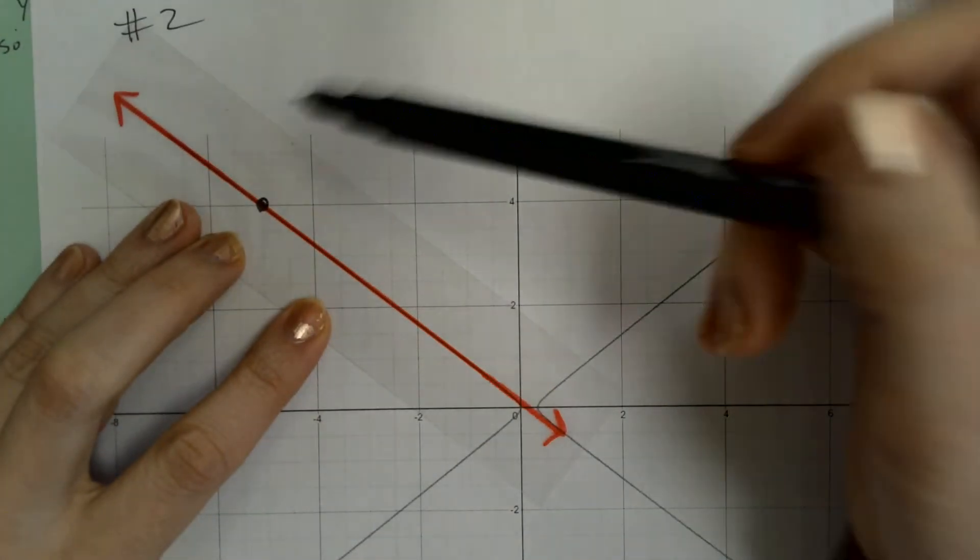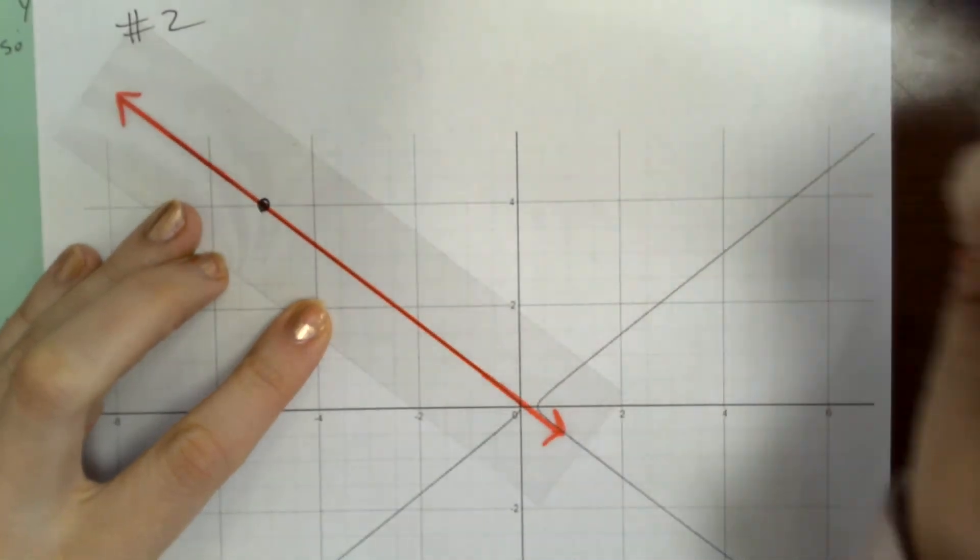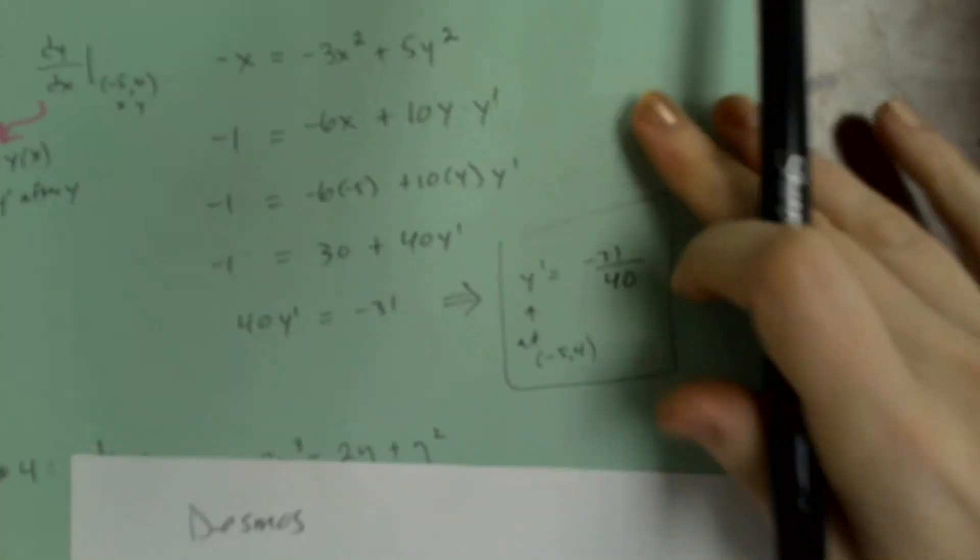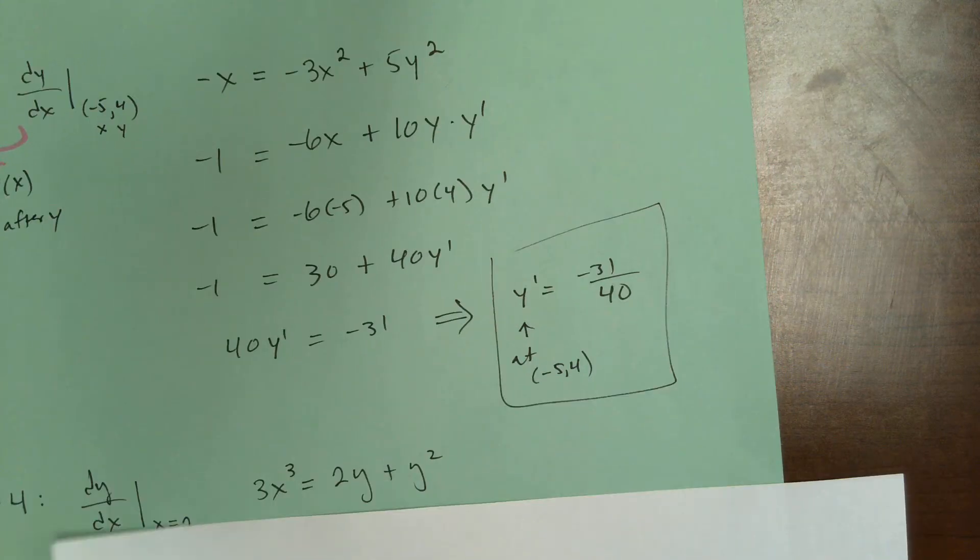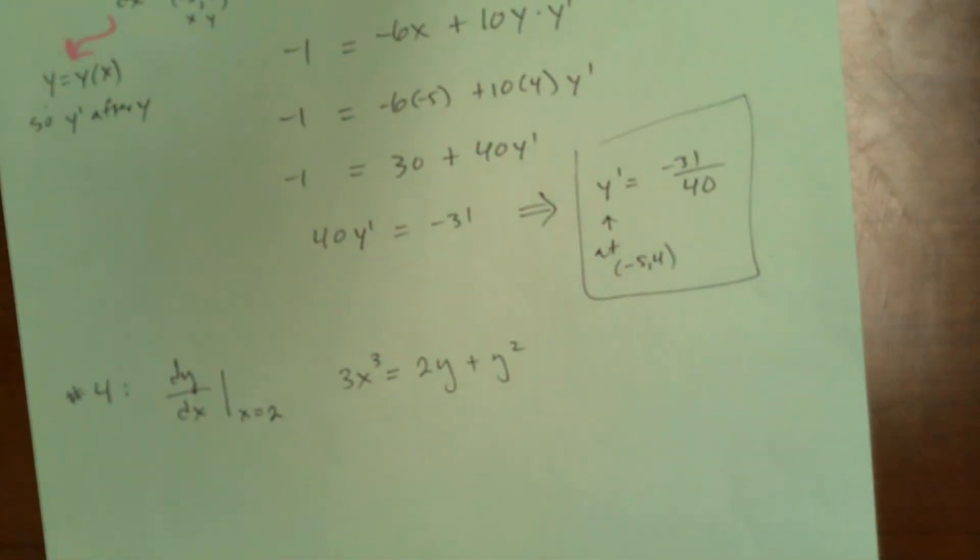But yeah, and I think if we took the time and we just used like rise over run or got two points on this line, we would end up with that. I'm not going to take the time to do that. But here's using calculus instead of the graph. Okay. Now let's do this one.